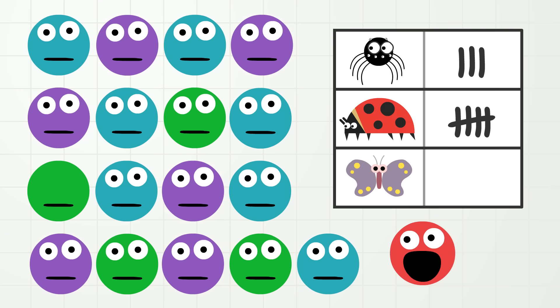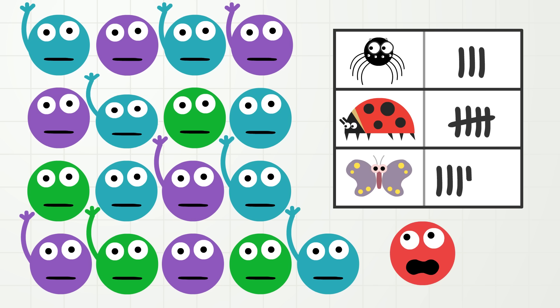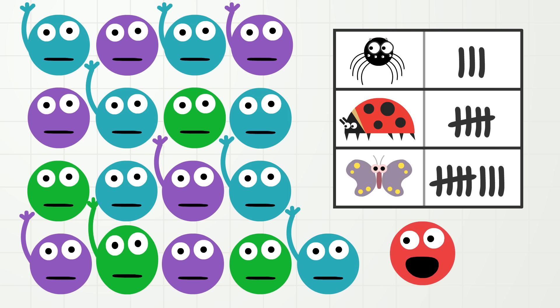Now, raise your hand if you like butterflies the best. Let's count. One, two, three, four, five, six, seven, eight, nine. So, nine brothers and sisters like a butterfly the best. Wow!